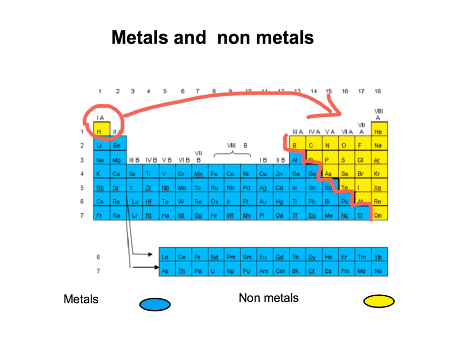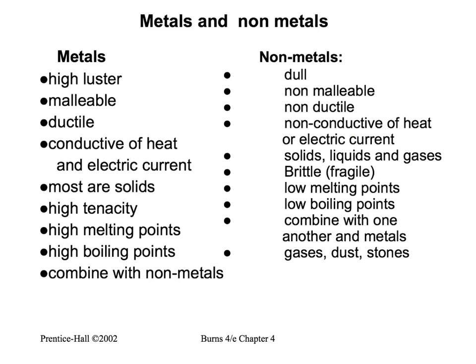So on one side we have the metals, and as you can see, it is the majority of the elements. And then we have non-metals on the other side. What is the difference between metals and non-metals? Well, metals, you already know, are bright. All metals are bright. And on the other hand, non-metals are dull.